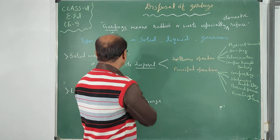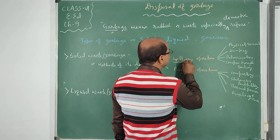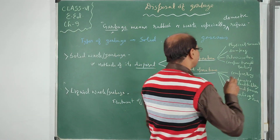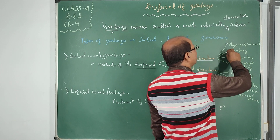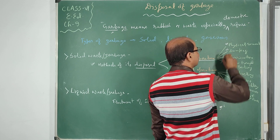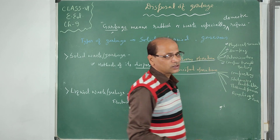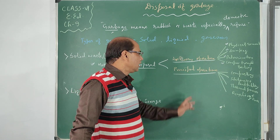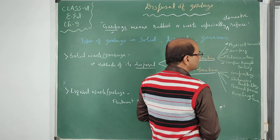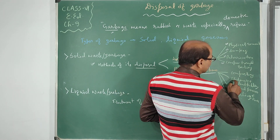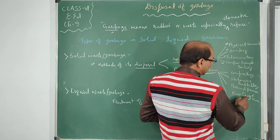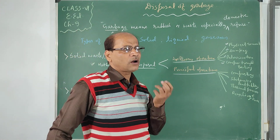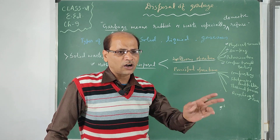How do we dispose solid garbage? For solid waste disposal, we have auxiliary operations and principal operations. Auxiliary operations include physical removal, dumping, pulverization, compaction, and baling. Principal operations include composting, sanitary landfilling, thermal process, and recycling and reuse — by which we can minimize garbage and its bad effects on human beings, society, and the environment.